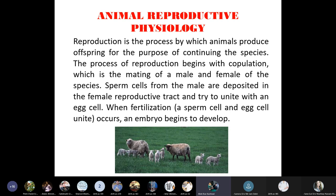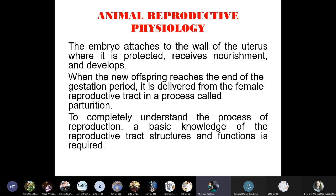Animal reproductive physiology: reproduction is the process by which animals produce offspring for the purpose of continuing the species. The process begins with copulation, the mating of a male and female. Sperm cells from the male are deposited in the female reproductive tract and unite with an egg cell. Upon fertilization, an embryo begins to develop and attaches to the wall of the uterus, where it is protected, receives nourishment, and develops until the end of the gestation period, when it is delivered in a process called parturition.